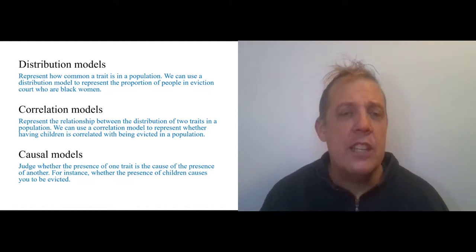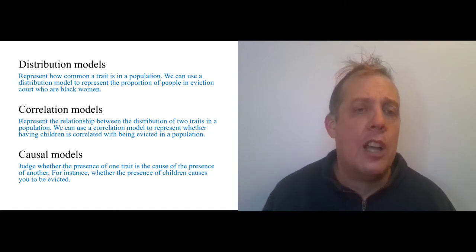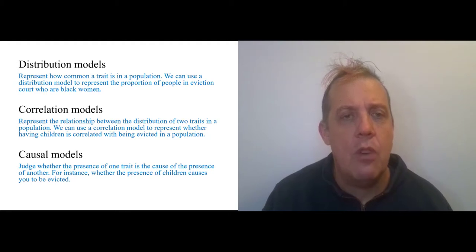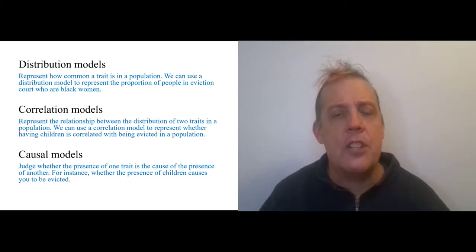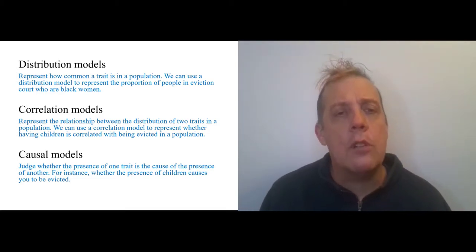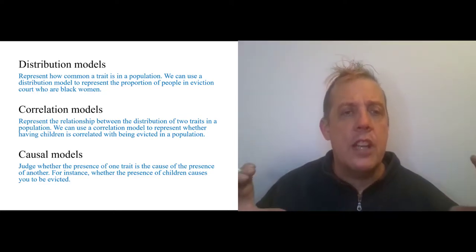The easiest is just to talk about a distribution. A distribution model is a statement that represents how common a trait is in a population. We use a distribution model to represent the portion of people in eviction court who are, for instance, black women. The quantified categorical statement '75% of people in eviction court are black women' gives you a distribution of a trait in a population.